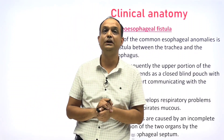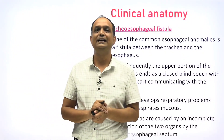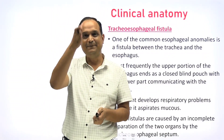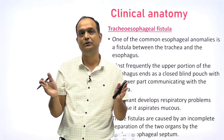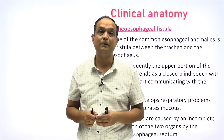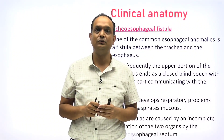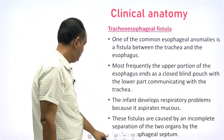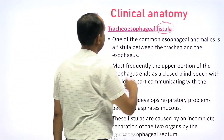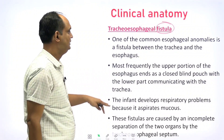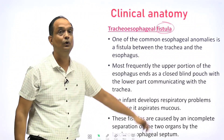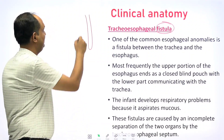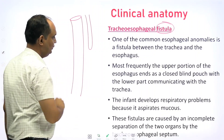One more applied topic is a congenital anomaly: tracheoesophageal fistula. In embryology, the trachea and esophagus develop from a common tube, and a septum forms to separate them. If the septum does not develop properly, there is failure of separation of the two tubes. The most common presentation is that the upper portion of the esophagus ends as a closed blind pouch, while the lower end of the esophagus communicates with the trachea.